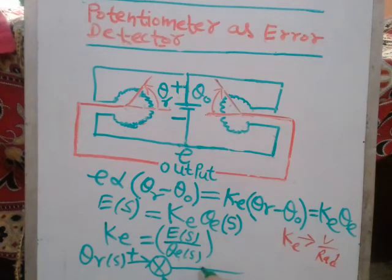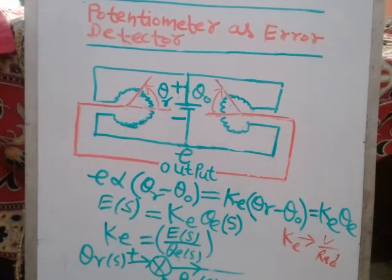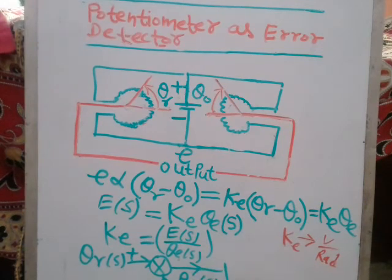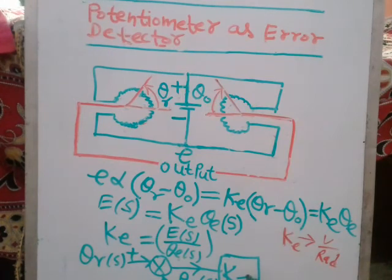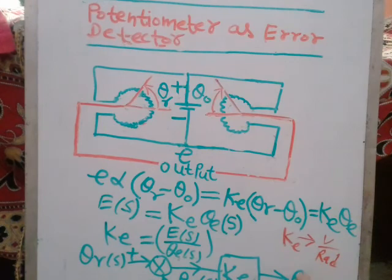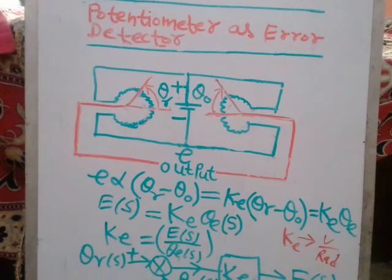The error theta_e — or theta_e(s) in the Laplace domain — is the difference between theta_r and theta_naught. The transfer function block is Ke, where Ke = Es / theta_e(s). The output of the block is Es, the error signal. This is the complete block diagram representation of the potentiometer error detector.